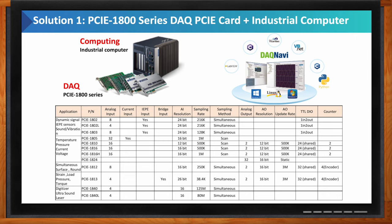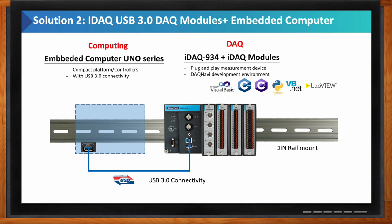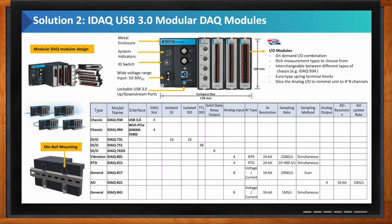For the iDAC USB 3.0 solution, the interface connecting the module to the embedded PC is USB 3.0. You can use an embedded computer like the UNO series and connect it with the iDAC series, which supports the programming languages you need. The iDAC series is modular I/O, giving you more flexibility in I/O combination. Time synchronization is very important for precise measurements. The enclosure is aluminum alloy, which is excellent for noise resistance — important because noise affects the accuracy of your data.